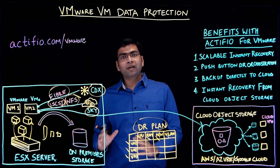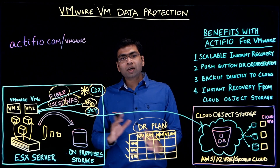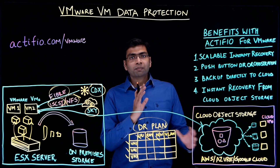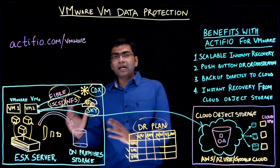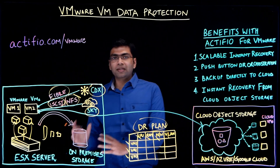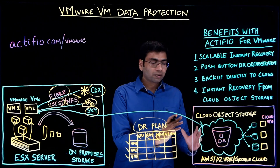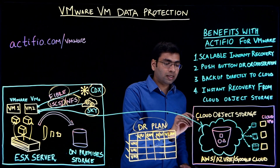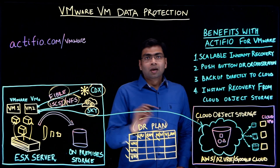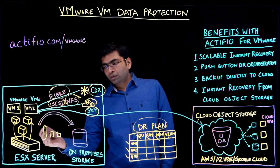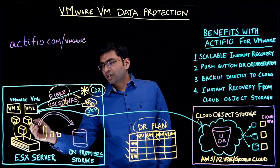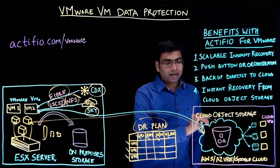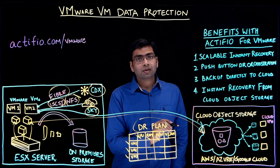Actifio is also very well integrated with all the public cloud platforms out there. For all the mission-critical VMs you can use the Actifio Sky appliance in the public cloud and store the backed-up data in block storage in the public cloud. For your tier 2 VMs, you can actually directly send the VMware VM data and back it up directly to object storage in cloud.